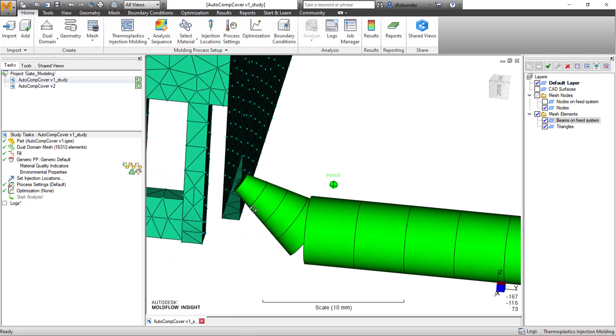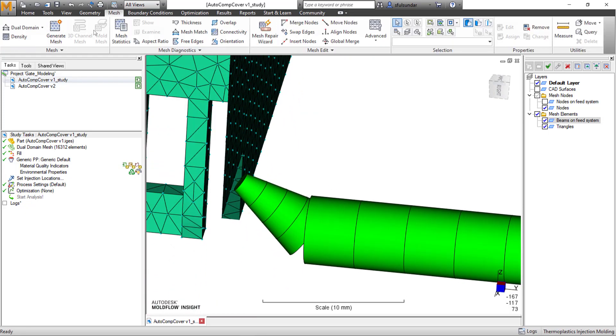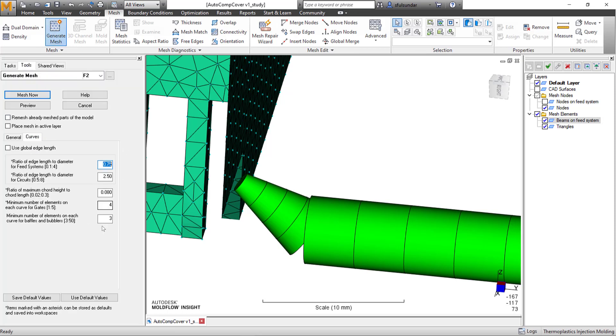Obviously I have created four elements. If you go into generate mesh and look at the curve, by default it has three. I just made it four, but by default it is three.